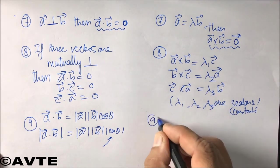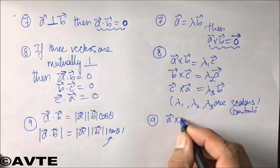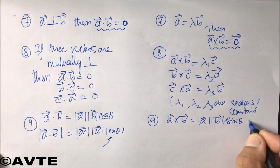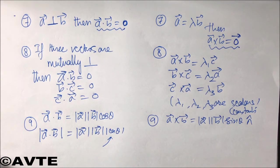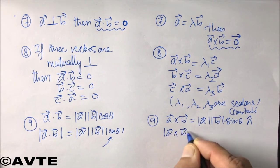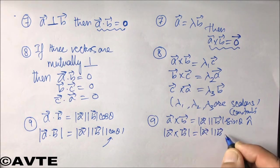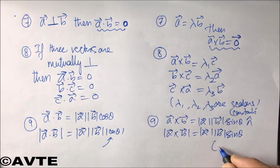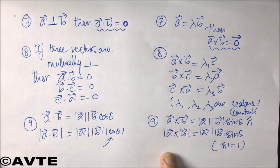Whereas in case of cross product, as you all know, theta belongs to closed interval of zero to pi, and sine in both quadrants is non-negative. So if we need to put mod, then there is no need to put absolute value on sine theta. You can leave it like this. And obviously, mod of n cap will be one. So the formula is mod of a cross b is mod a mod b sine theta.